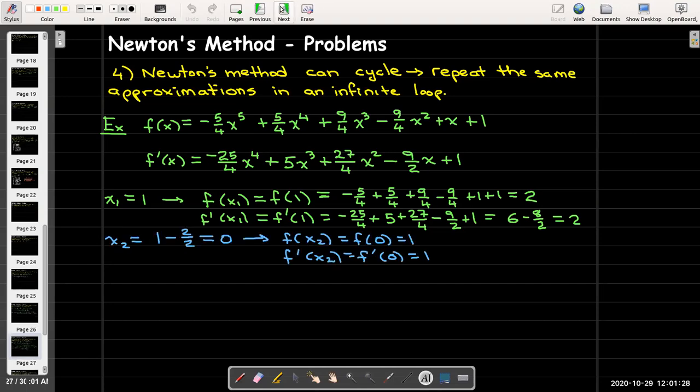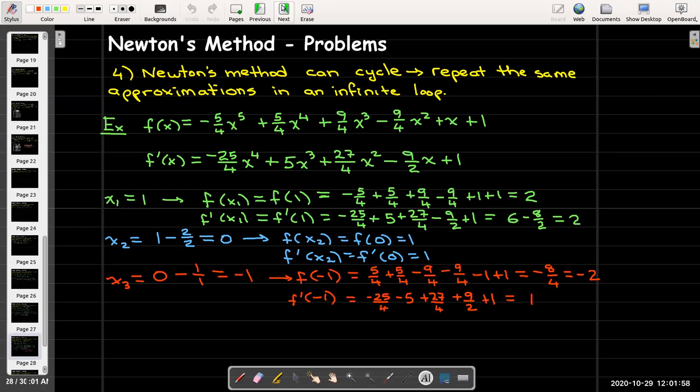So then I can calculate x sub 2 as being 1 minus 2 over 2, which is 0. Now be careful here. This doesn't mean I'm done because this is just saying that my second approximation is 0. But we can see that 0 is not our solution here. f of 0 equals 1 and f prime of 0 is also 1. So it's pretty easy to calculate x sub 3. That's just going to be 0 minus 1 over 1, which is negative 1.